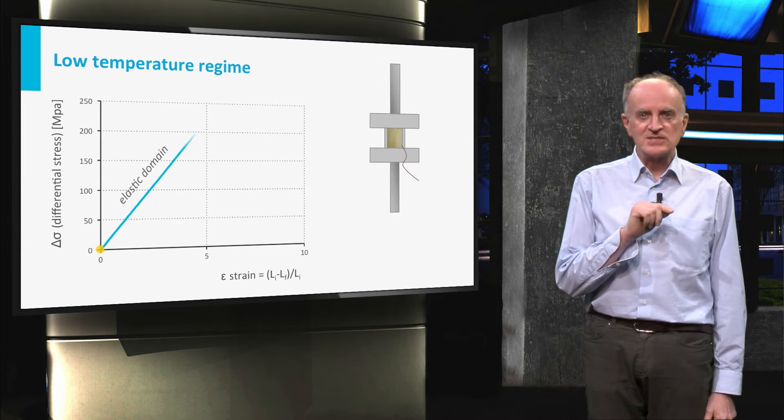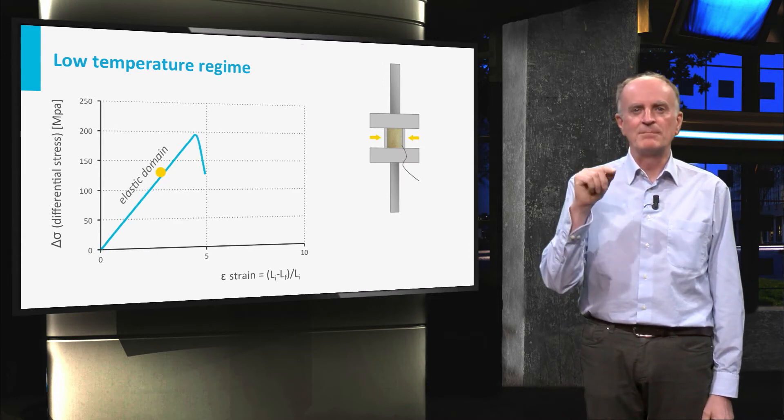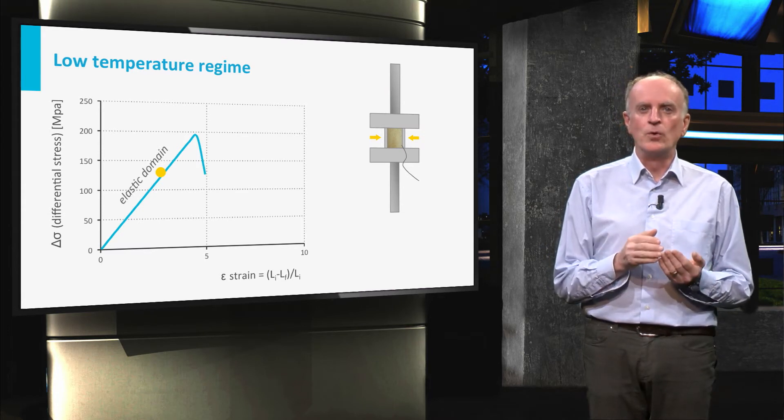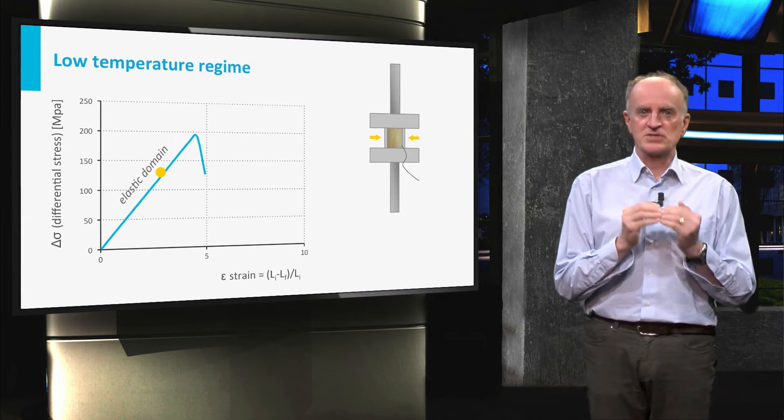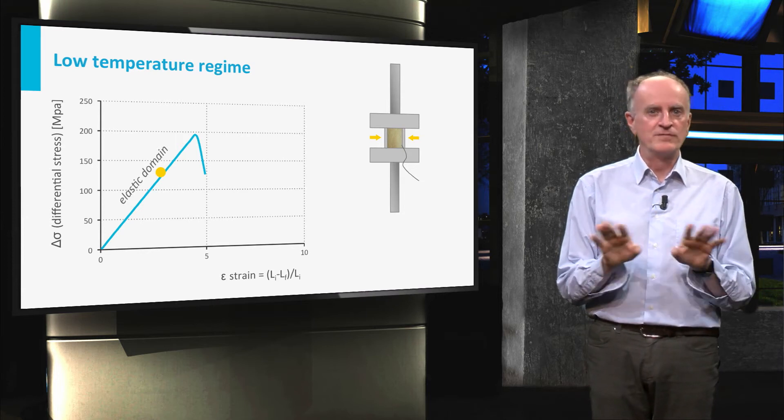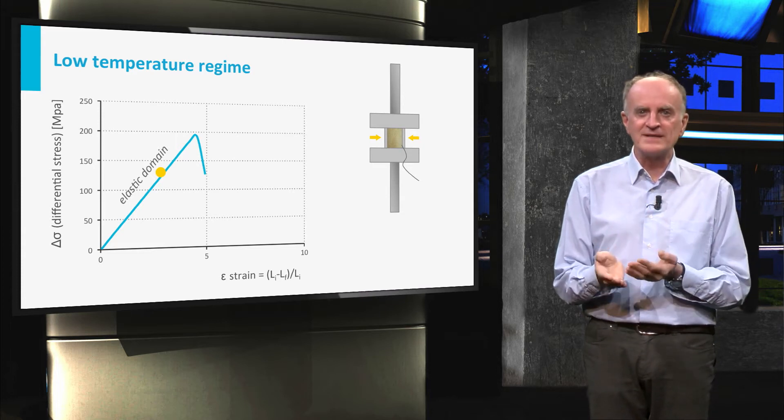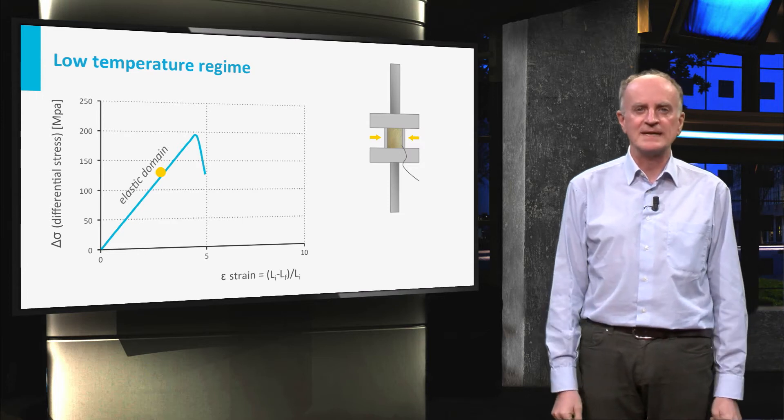In the initial stages of the experiment you can see a linear relationship between applied stress and strain. This means that deformation can only occur if the stress keeps increasing. If you would stop the experiment here, no further deformation would occur. If you would remove completely the stress, the sample would go back to its original shape and size.